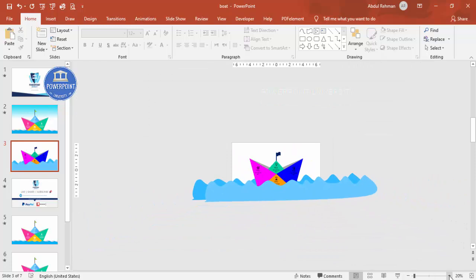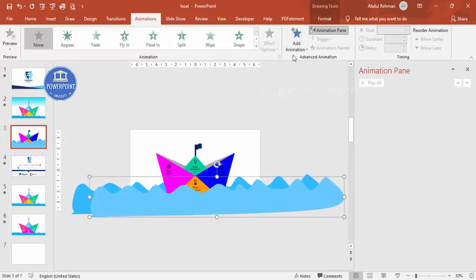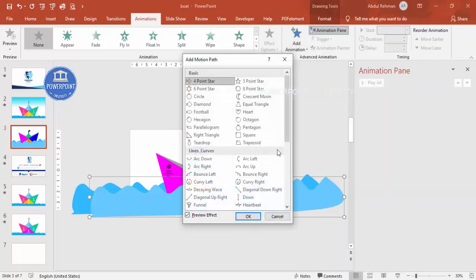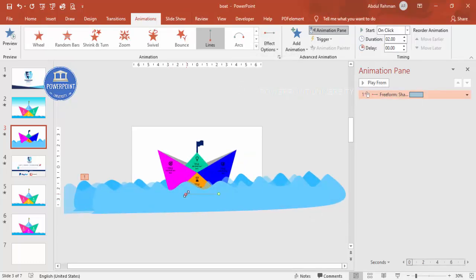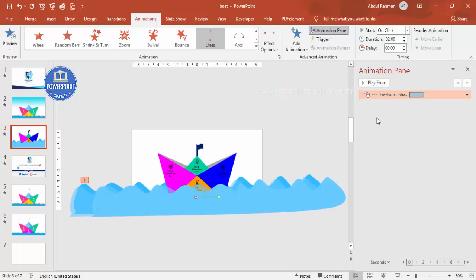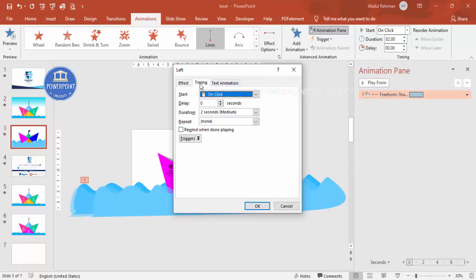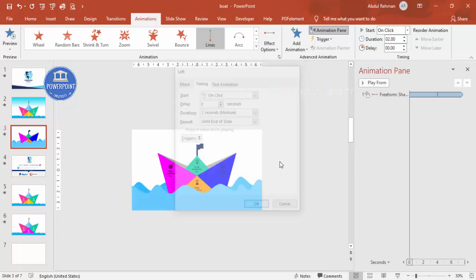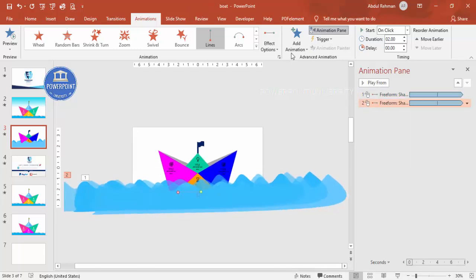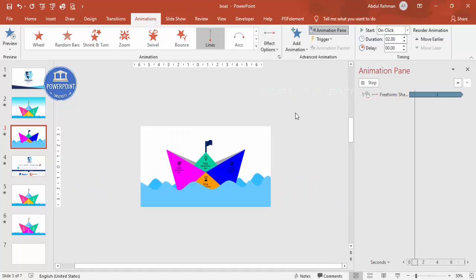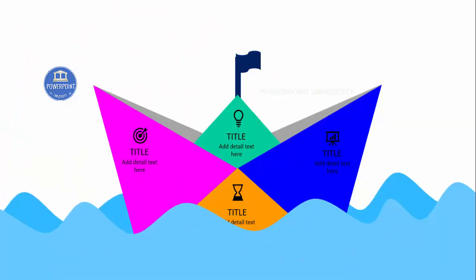Zoom out and go to Animations, then enable the Animation Pane. Select the first wave, click Add Animation, then More Motion Paths — choose a left motion path and click OK. Reduce the movement distance slightly. Double-click the animation, remove smooth start and smooth end, enable auto-reverse, set timing to medium, and set it to repeat until end of slide. Use Animation Painter to copy this to the second wave, but change its direction to right so one wave goes left and the other goes right, both starting with previous.